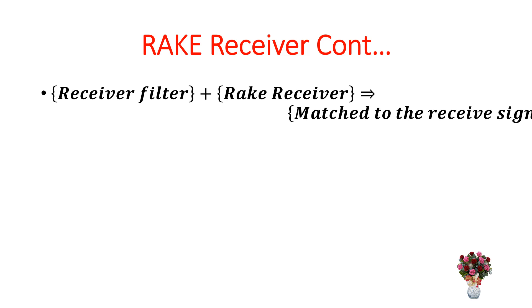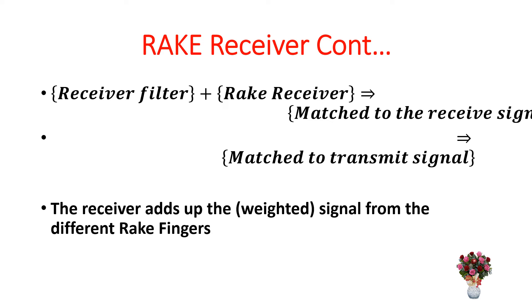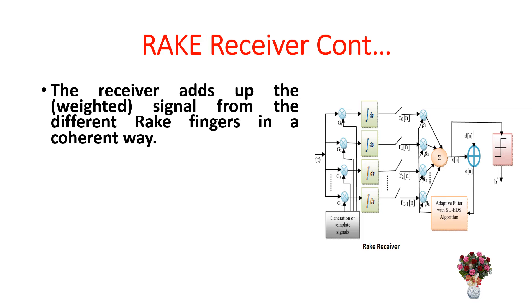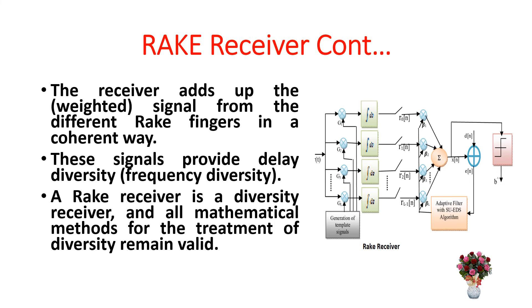The receiver filter plus rake receiver provides a match to the received signal and to the transmit signal. The receiver adds up the weighted signals from the different rake fingers in a coherent way. These signals provide delay diversity, that is, frequency diversity. A rake receiver is a diversity receiver and all mathematical methods for the treatment of diversity remain valid.